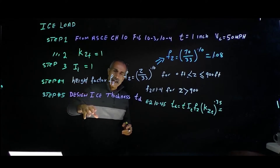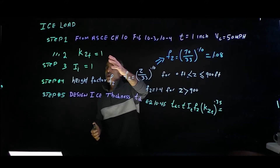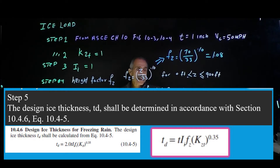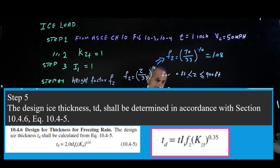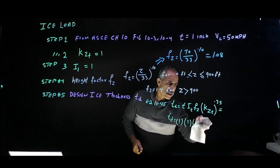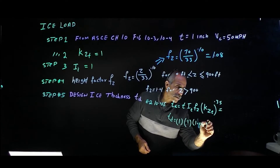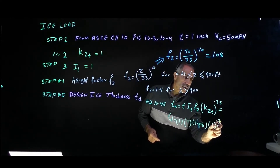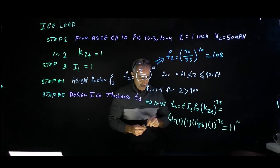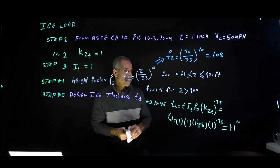Step five: calculate the design ice thickness TD. We said T equals 1 inch from Figure 10.3. The design thickness equation is TD = T × Ii × fz × KZT^0.35. That gives us TD = 1 inch × 1 × 1.08 × 1^0.35, which comes out to 1.1 inches.